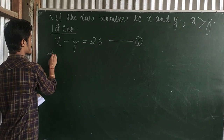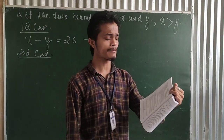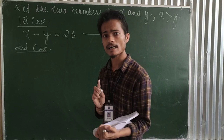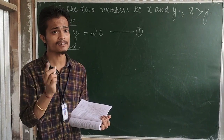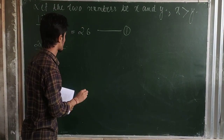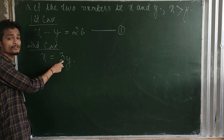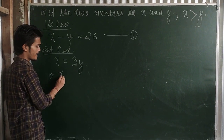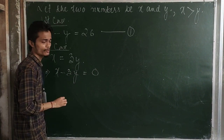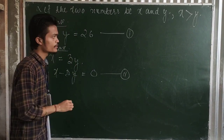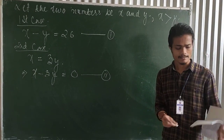In the second case, one number is three times the other. The greater one will be three times the other, and the greater one is x. So x is three times y, which gives us x minus 3y equals 0. That is equation 2. Now we have equation 1 and equation 2, and we have to solve them using the substitution method, as it is mentioned here. If another method were specified, we would use that, but here it is the substitution method.